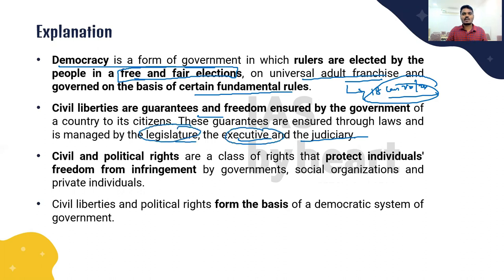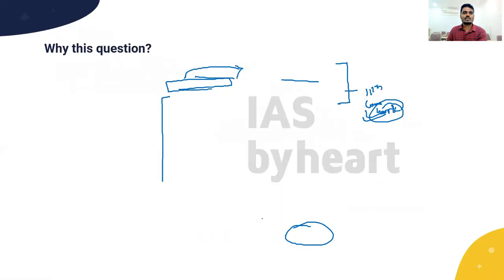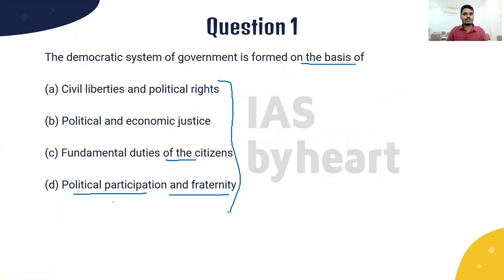The legislature makes the law for citizens, the executive implements the law, and the judiciary oversees which laws are constitutionally valid. Civil and political rights are a class of rights that protect individuals' freedom from influence by governments, social organizations, and private individuals. Civil liberties and political rights form the basis of a democratic system of government. So we can conclude that Option A is the correct answer: civil liberties and political rights form the basis for a democratic system of government.